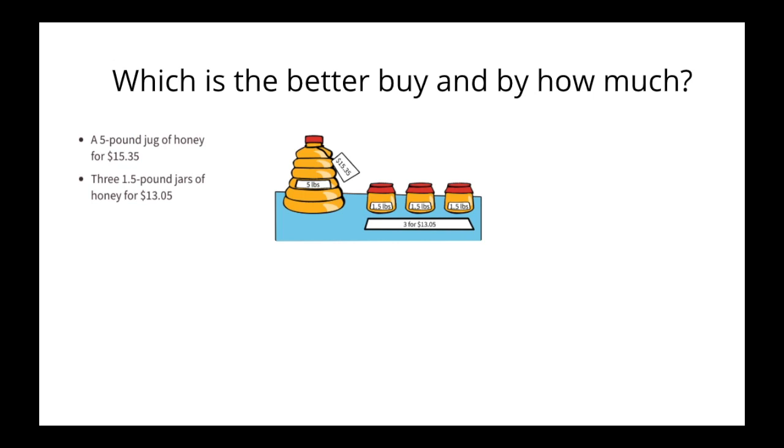So when I started to solve this, I thought it was really difficult for me to compare a five pound jar and three one and a half pound jars. So I decided to just add up the one and a half pound jars. So I got four and five tenths or 4.5 pounds for $13.05 and then I still had a five pound jar for $15.35. But even when I got this, I was still unsure how to compare the four and a half pound jar and the five pound jar because they were worth different amounts.